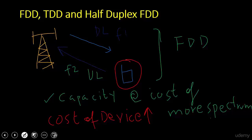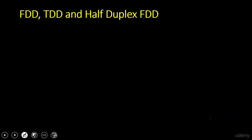FDD is attractive for systems where the requirement for uplink and downlink capacity is relatively symmetric — you have the same requirement for uplink as for downlink. That's the FDD scenario.